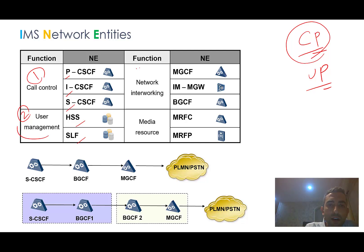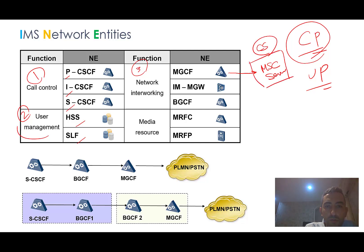The third part is the network interworking function. As discussed, this includes the MGCF — Media Gateway Control Function — which can also be an MSC server from the CS part, and the IM-MGW — IMS Media Gateway — which can also be a media gateway from the CS part, such as a transit media gateway. We also have the BGCF — Breakout Gateway Control Function.